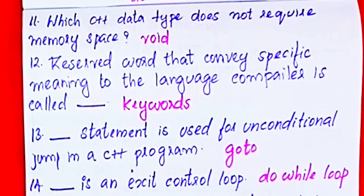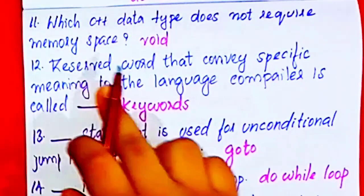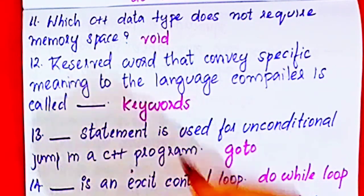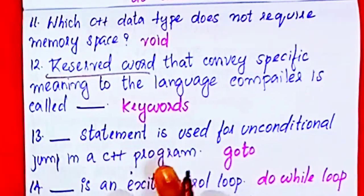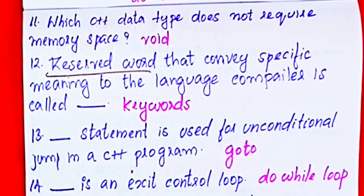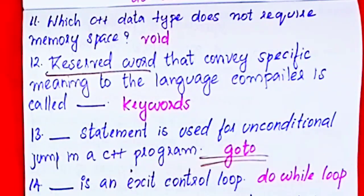Reserved words that convey specific meaning to the language compiler are called keywords. C++ reserved words are keywords. The statement used for unconditional jump in a C++ program is the goto statement.